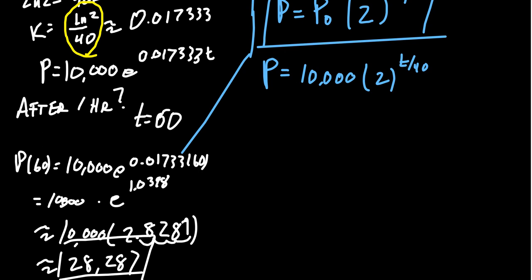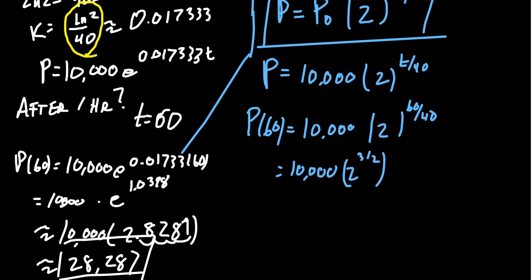On the other hand, if we used our doubling model, which is honestly the one I prefer personally, in that situation, we still have to compute P of 60. So we're going to get 10,000 times 2 to the 60 over 40 power. And so that fraction actually simplifies to be 3 halves, or 1.5 if you prefer.